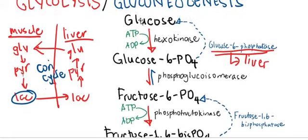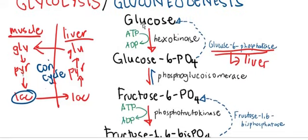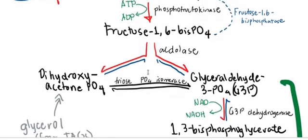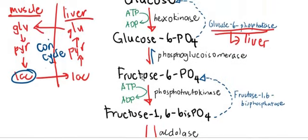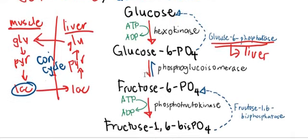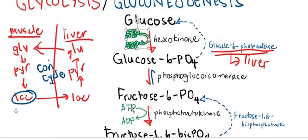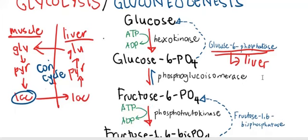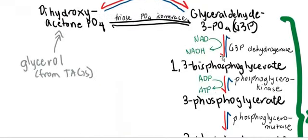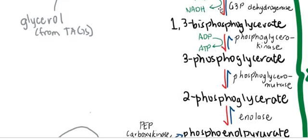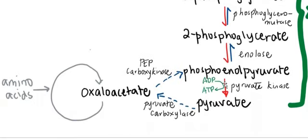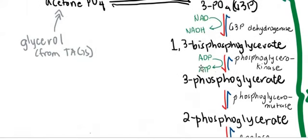The first five steps of glycolysis — steps 1 through 5 — are called the energy investment steps, because here you use up ATP. Step 1 uses 1 ATP, and step 3 also uses 1 ATP, giving a loss of 2 ATP total. Steps 6 through 10 are the energy payoff phase, where you produce ATP. Note that in glycolysis, G3P is the only functional substrate; therefore DHAP must also become G3P, and everything from the payoff phase onward is multiplied by 2.